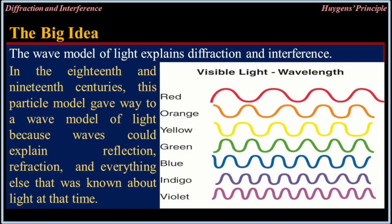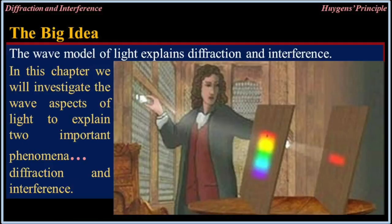In the 18th and 19th centuries, this particle model gave way to the wave model of light because waves could explain reflection, refraction, and everything else that was known about light at that time. In this chapter, we will investigate the wave aspects of light to explain two important phenomena: diffraction and interference.